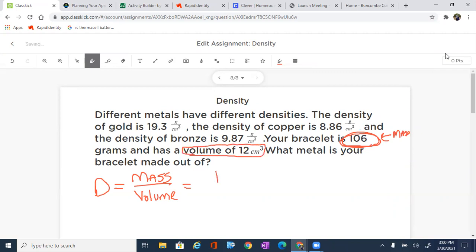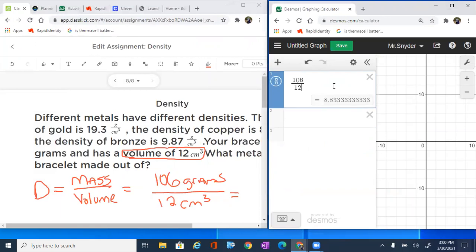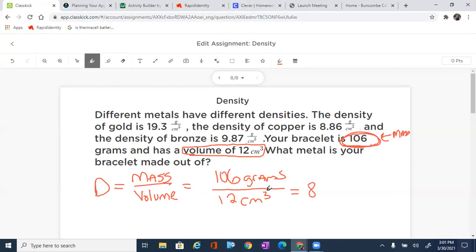So our mass is going to be 106 grams over our volume, which is going to be 12 cubic centimeters. And we can go ahead and make that calculation. Let's take 106 and divide it by 12. And that will bring us to 8.83 grams per cubic centimeter.